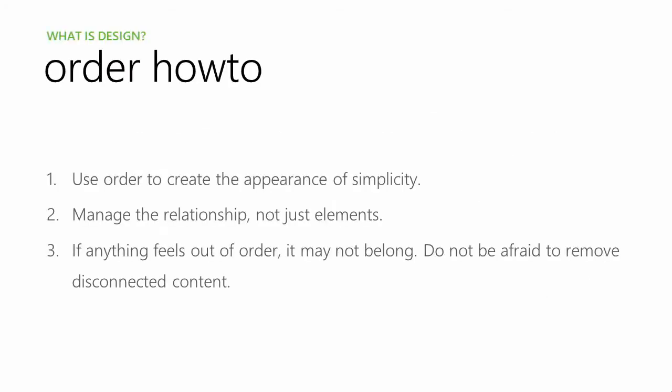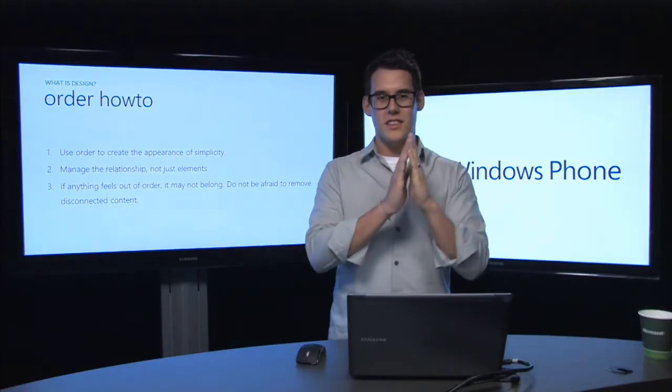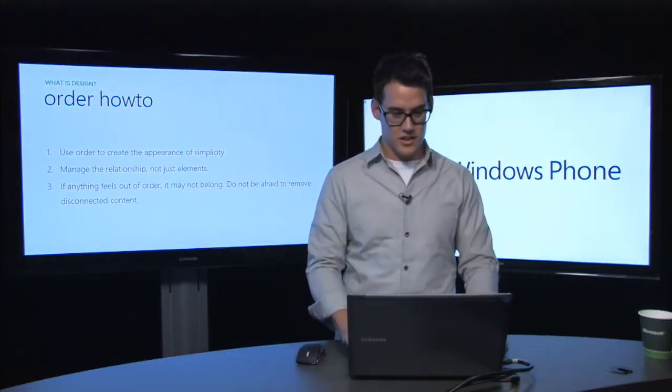A couple of things I like to go back to when trying to bring order to a lot of different requirements: use order to create the appearance of simplicity. One of the easiest ways to approach this is to manage the relationships, not the elements. When you're laying out a page for the very first time, it's really easy to just lay everything out in a visually beautiful way — but that's graphic design, not interface design. In interface design, you need to think about the tabs that correlate to the content so users realize where they're at in the hierarchical navigation structure.